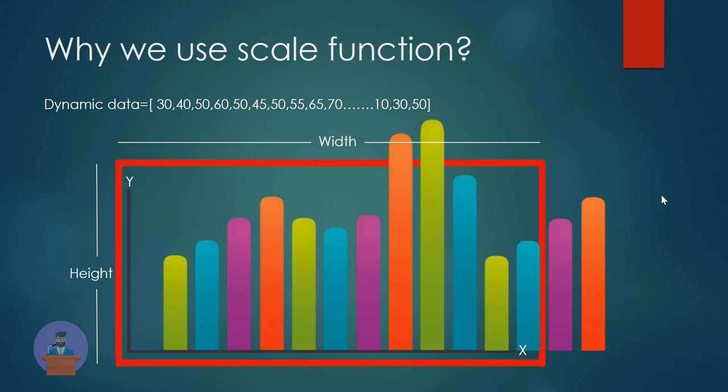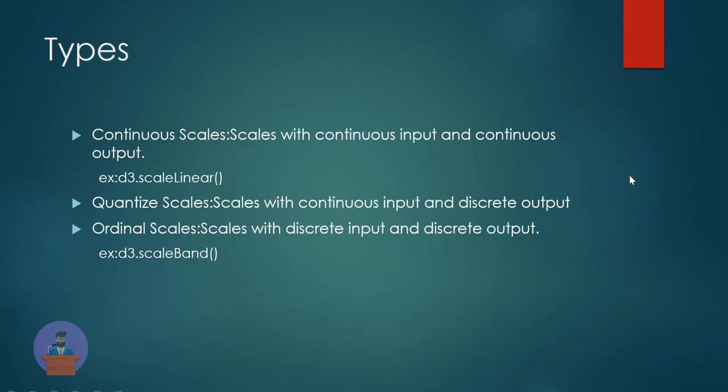So let's discuss the types of scale functions. In D3 we basically have three types: continuous scale function, quantize, and ordinal scale function. In continuous scale we provide a continuous input and the function returns a continuous output. In quantize scale we provide a continuous input and it gives a discrete output. In ordinal scale we provide a discrete input and get a discrete output — for example, scale band. In D3 there are a number of scale functions but we will only discuss linear and scale band.